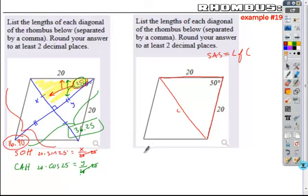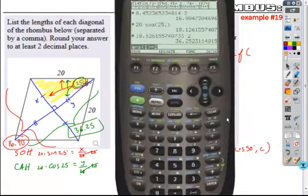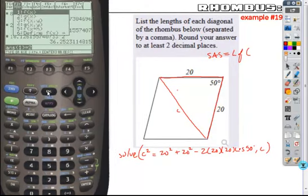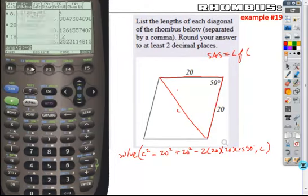So if I were to call this part C, I could say that C squared is equal to the sum of the squares of the other two sides. So 20 squared plus 20 squared minus twice the product of those two sides times the cosine of the angle opposite that, which is the whole thing 50 degrees. And so if I use the solve feature on my calculator and found C, this time I'd get the whole length. I wouldn't have to double it. So if I went into the solve and type this in, I'll go ahead and use C, but I could change it to X if I wanted to.